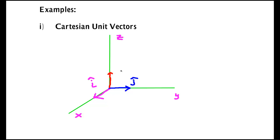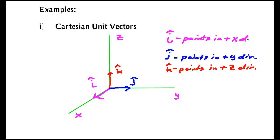And there is one unit vector that goes along z and its symbol is k-hat. So k-hat points in plus z direction, j-hat points in plus y direction, and last but not least i-hat points in plus x direction.